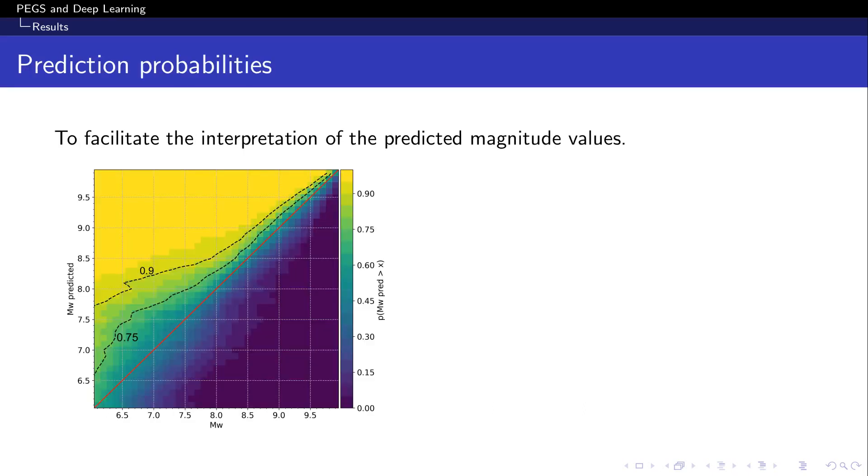But ultimately, what we're really interested in is the performance of the model when the true magnitude is not known. We can have a different view of the prediction capabilities of the model by computing the probability that a predicted magnitude is above a given magnitude. This image provides guidelines for the interpretation of the predictions of our model and can guide the decisions in the context of early warning applications. We can draw isoprobability lines to identify robust predictions up to the desired level of confidence. So, for example, imagine that the model is fed with new real data and predicts 9. So, this figure is saying that there is 100% probability that the true magnitude of the earthquake is above, let's say, 8.